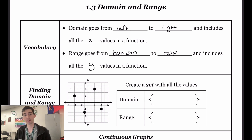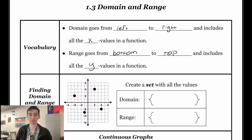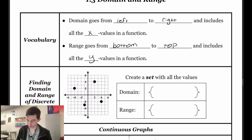We have two different types of functions: we have discrete functions and we have continuous functions. We're going to look at how we find domain and range of discrete functions first.